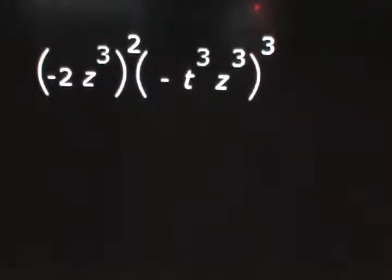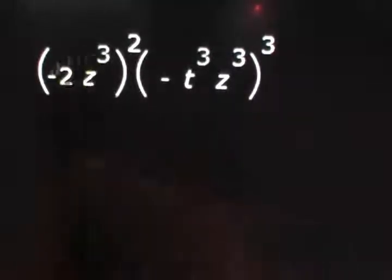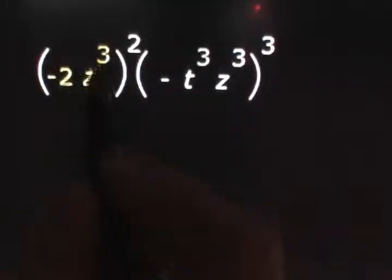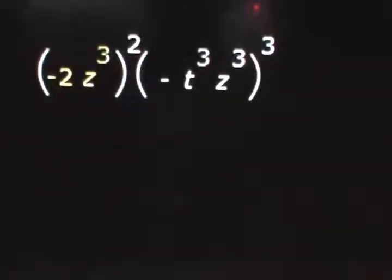In this example, we're multiplying two powers of monomials. To do this, we'll work with the first monomial, negative 2z to the third, all of which is raised to the second power.